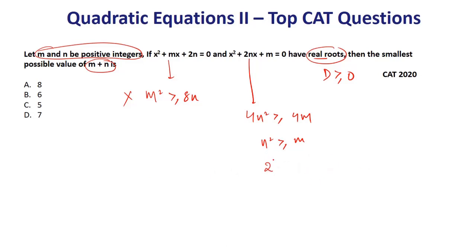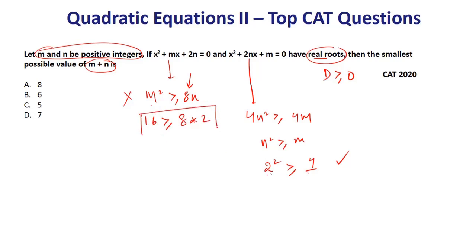Let's try n = 2. We need n² ≥ m, so 4 ≥ m — take m = 4. Check: 2² ≥ 4 ✓. Now check m² ≥ 8n: 16 ≥ 16 ✓. So the smallest values are n = 2 and m = 4. The answer is 6.